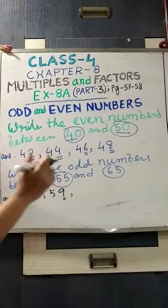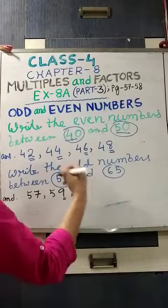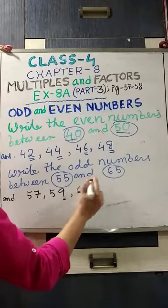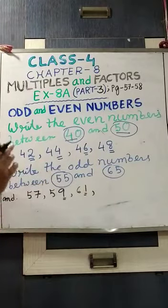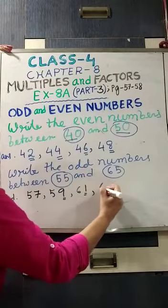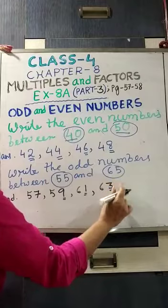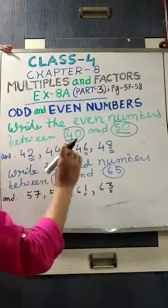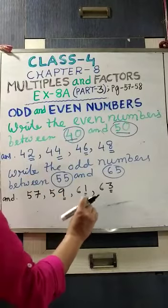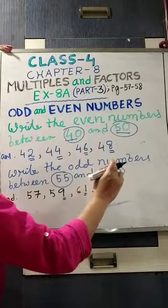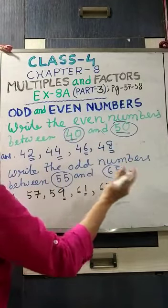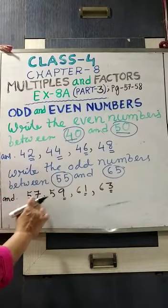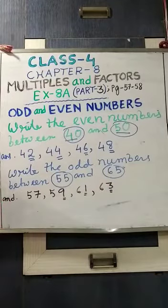After 59 comes 60 — last digit is 0, an even digit, we cannot take 60. After 60 comes 61 — 1 is an odd digit in one's place, so we will take 61. Then 62 — last digit is 2, an even digit, we will not take it. After 62 comes 63 — 3 is an odd digit in one's place, so 63 is an odd number. After 63 comes 64 — last digit is 4, an even digit, we cannot take 64. After 64 comes 65, but we cannot take 65 as we must finish before 65. So between 55 and 65, the 4 odd numbers are 57, 59, 61, and 63.